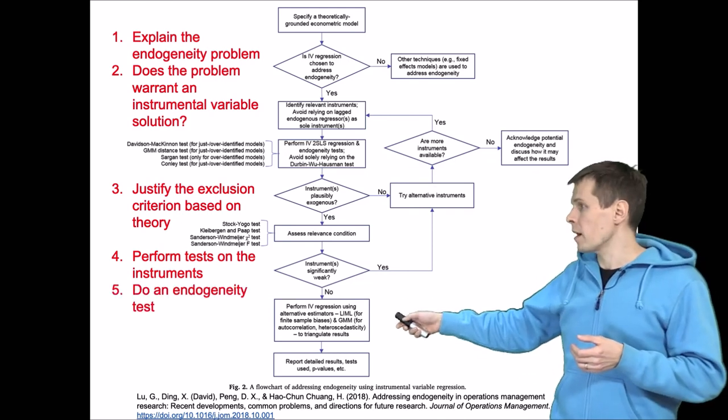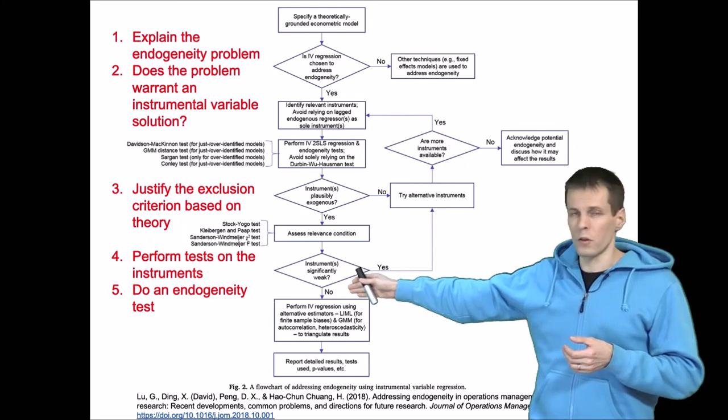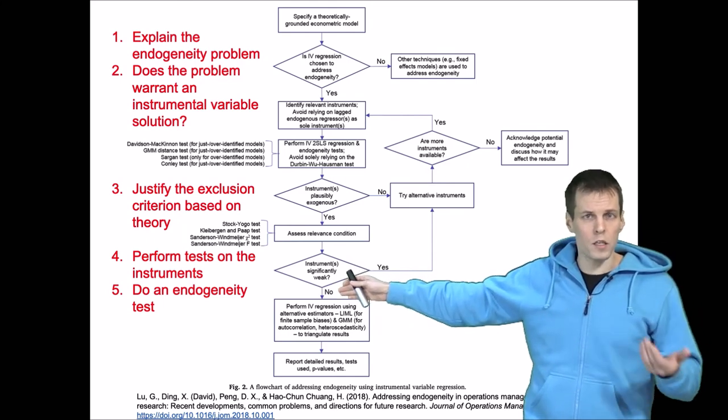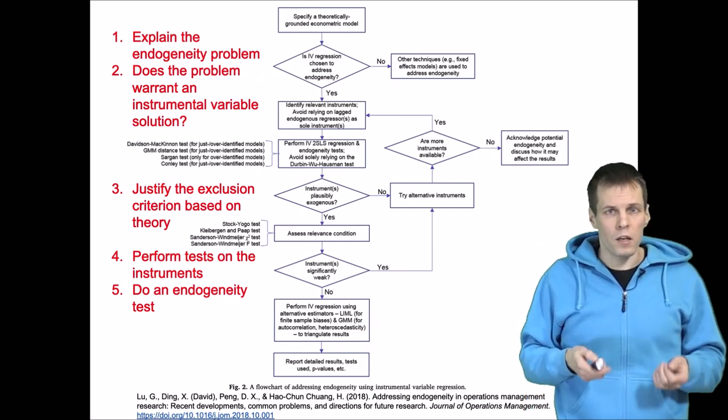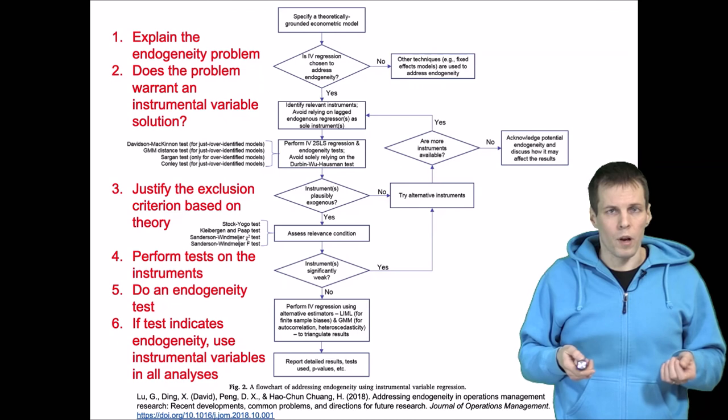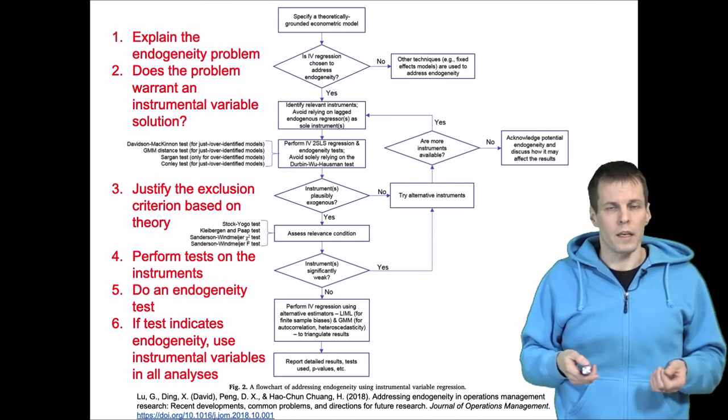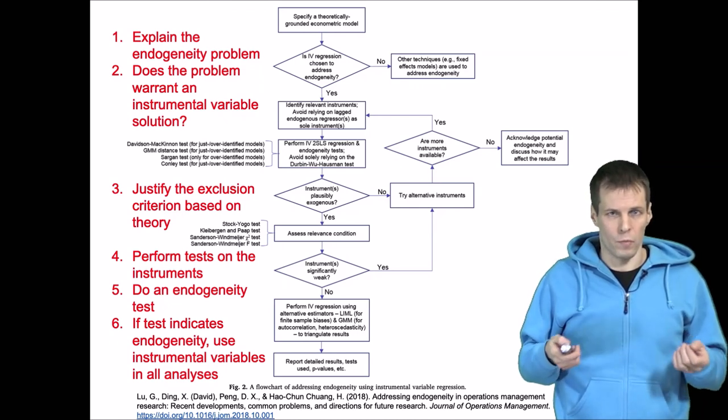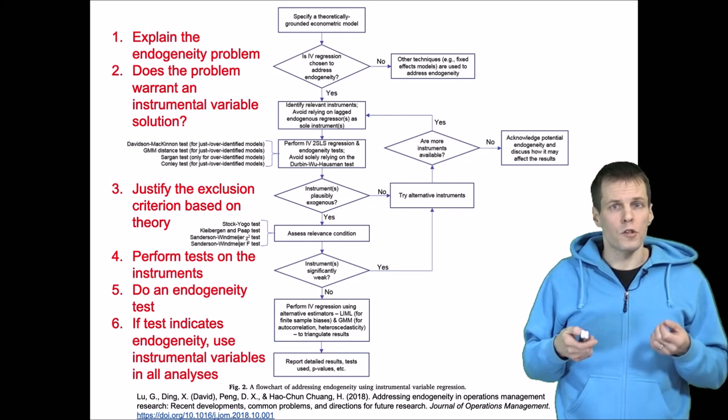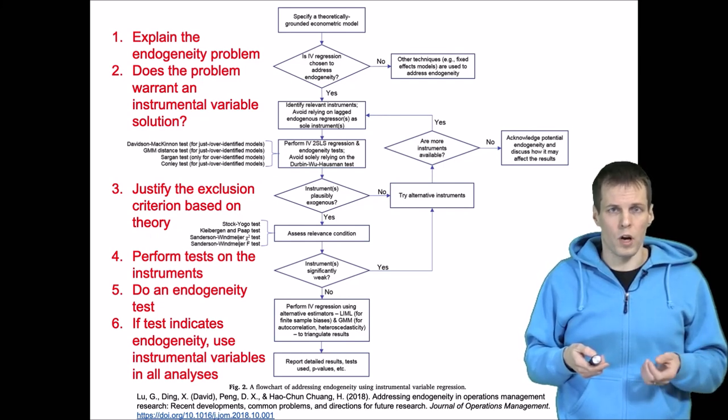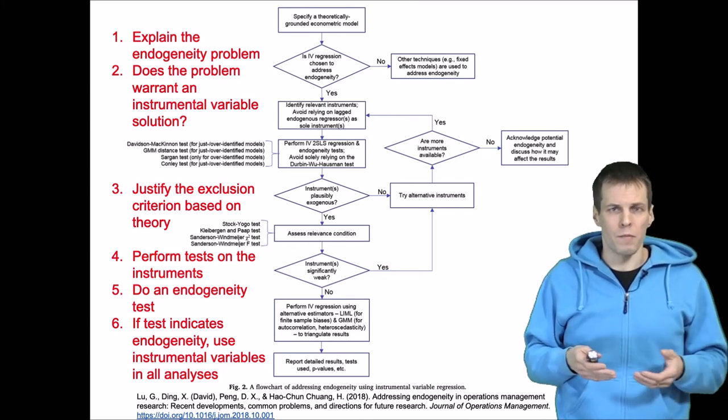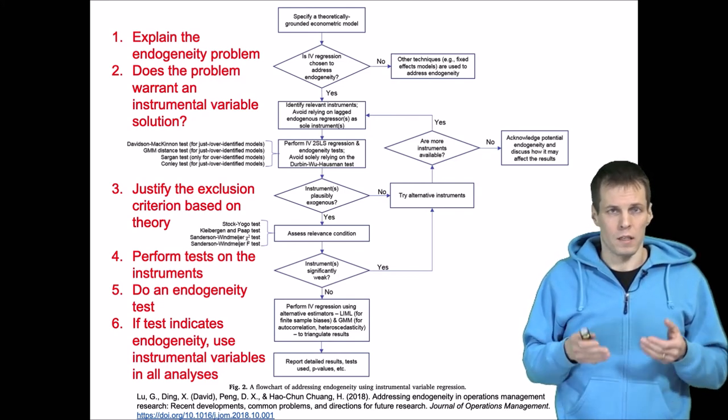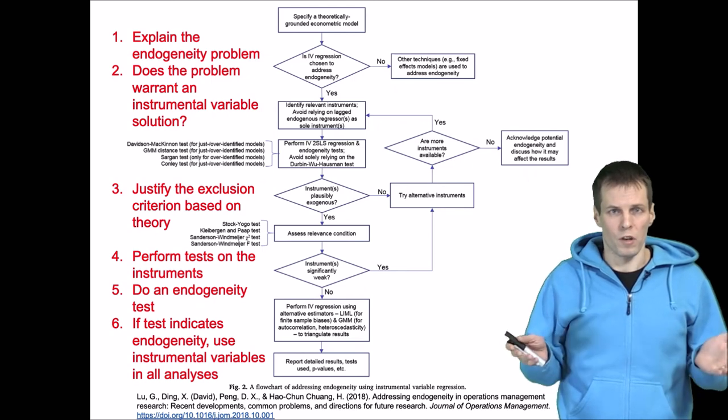And then the final step, you do an endogeneity test using the instrumental variables. And if the test indicates that there's endogeneity, then you should apply instrumental variables in all the main analysis of your paper. If the test shows that there is no endogeneity problem, or you cannot conclude that there's an endogeneity problem, then it may be okay by just excluding those instruments from further analysis.